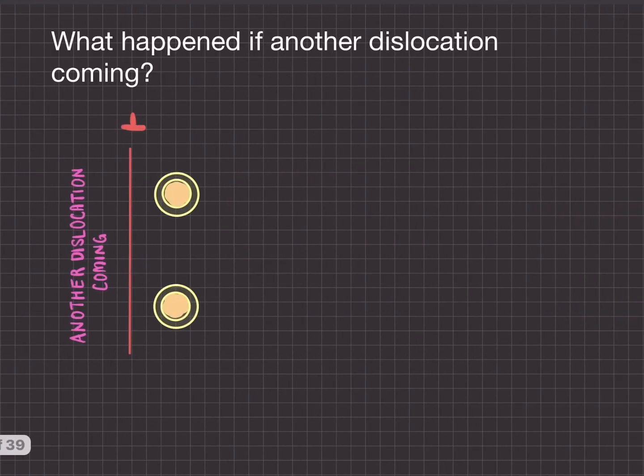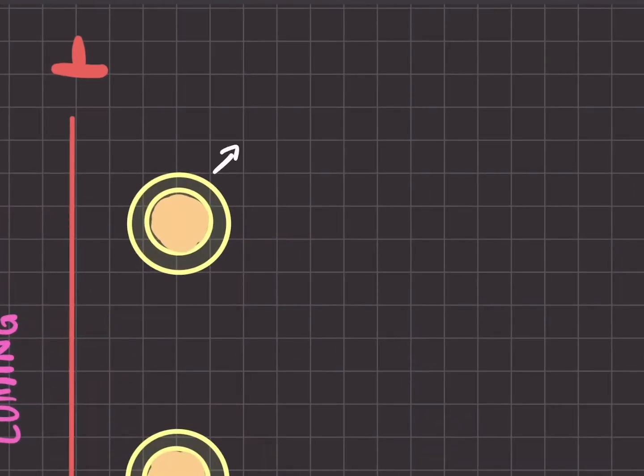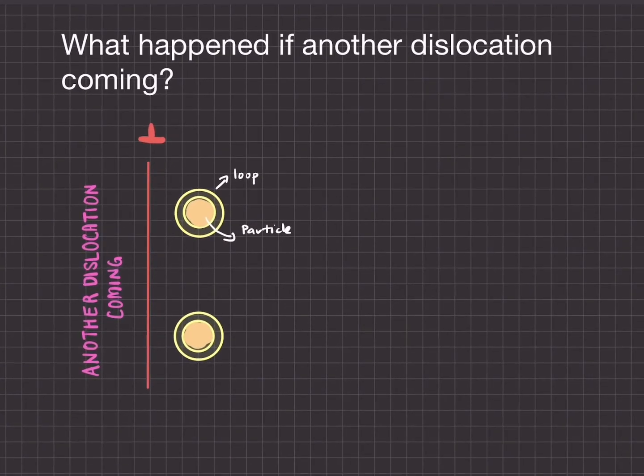What happens if another dislocation is coming? It will interact with both the loop and also the particle. As a result, this will slow down the dislocation as it is moving.